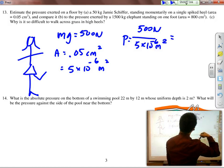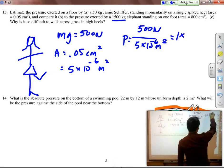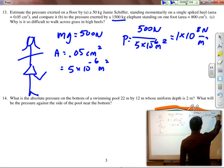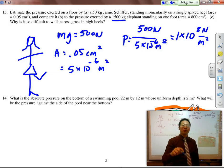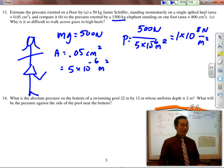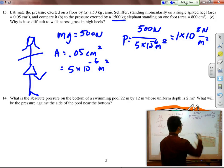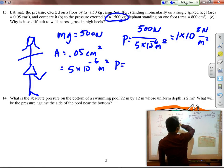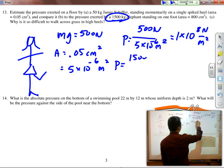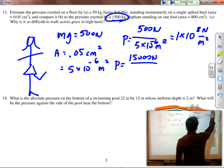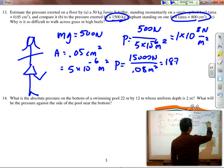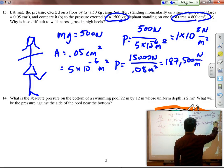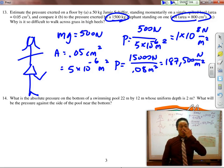If we now calculate her pressure, the pressure is equal to 500 newtons divided by 5 times 10 to the negative 6 meters squared, which equals 1 times 10 to the 8th newtons per meter squared. 100 million newtons per meter squared. If we compare that to an elephant now, the pressure exerted by the elephant, who has a mass of 1500, that's a weight of 15,000 newtons, divided by an area of 800 centimeters squared, so that's 0.08 meters squared, would equal 187,500 newtons per meter squared. A large amount, but not nearly as large as Jamie Schiffer.